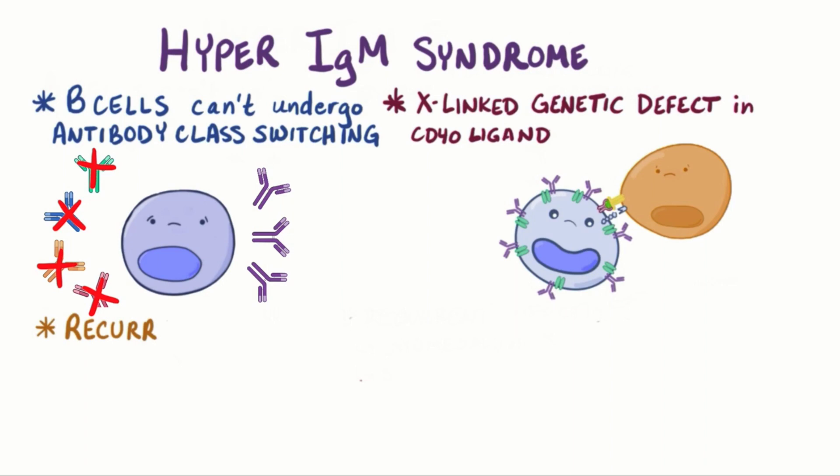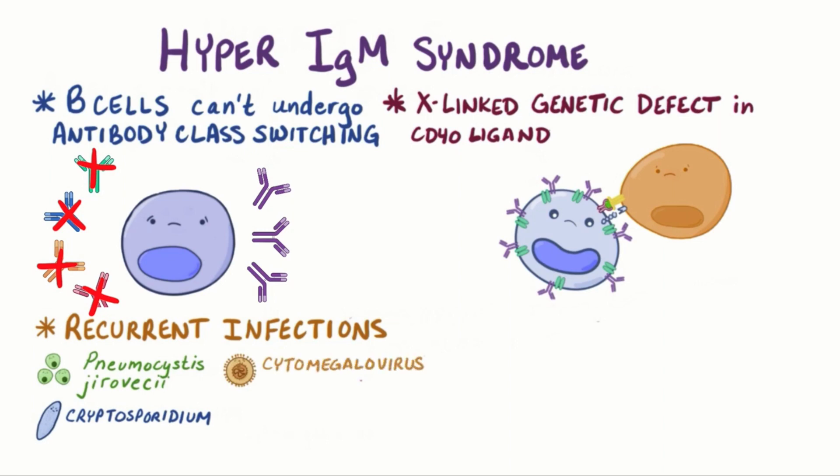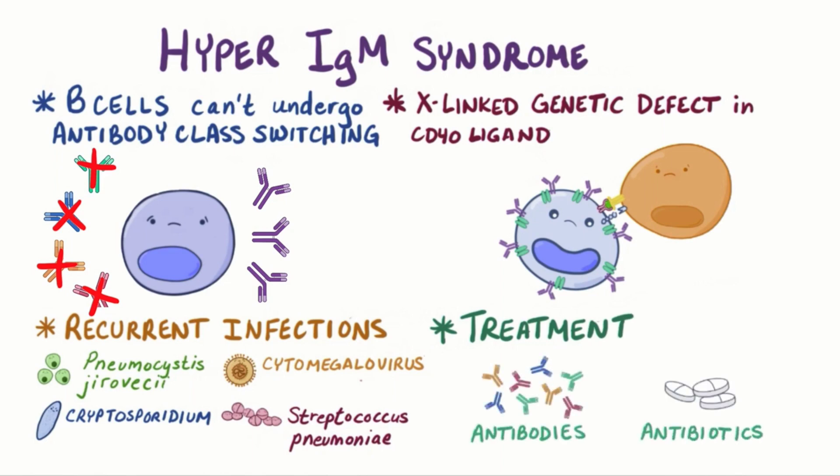Affected individuals experience recurrent infections with pneumocystis jirovecii, cryptosporidium, cytomegalovirus, and encapsulated bacteria like Streptococcus pneumoniae, and might need infusions of antibodies produced by other people in addition to antibiotics.